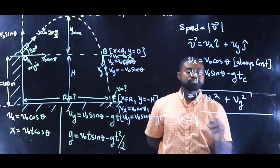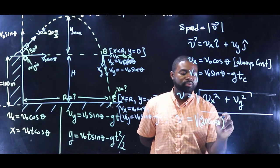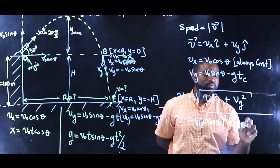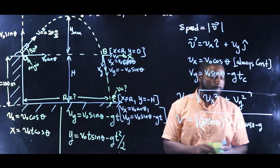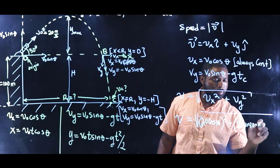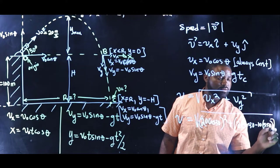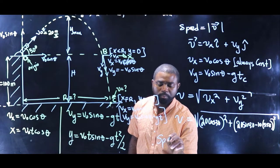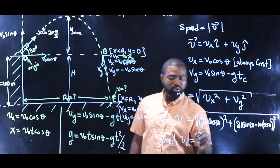This would mean that V is equal to the square root of 20 cosine 30 all squared, plus 20 sine 30 minus 10 times 5.58 all squared. And the speed at point C, VC, if you do the calculations, it will give you 49.